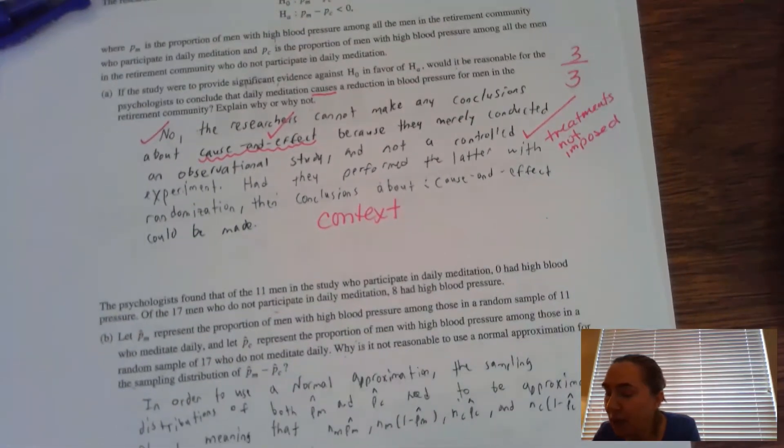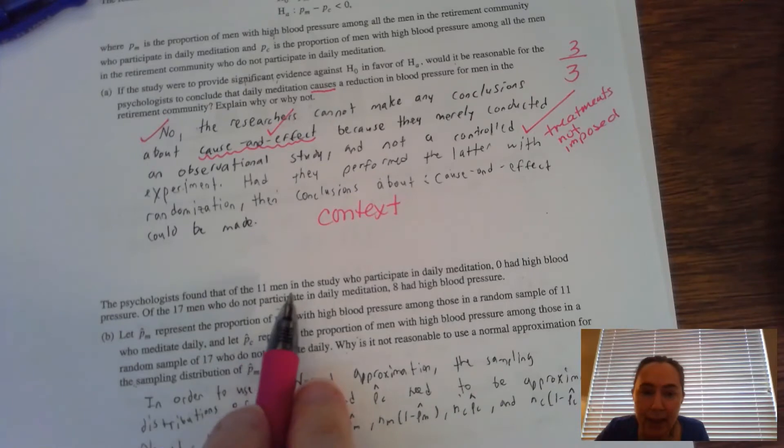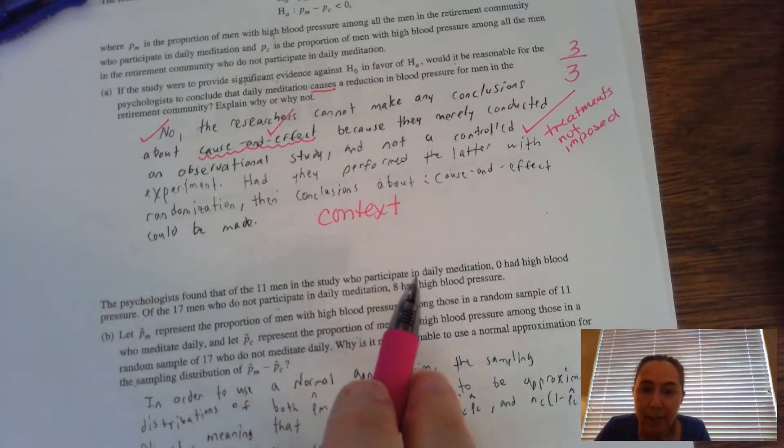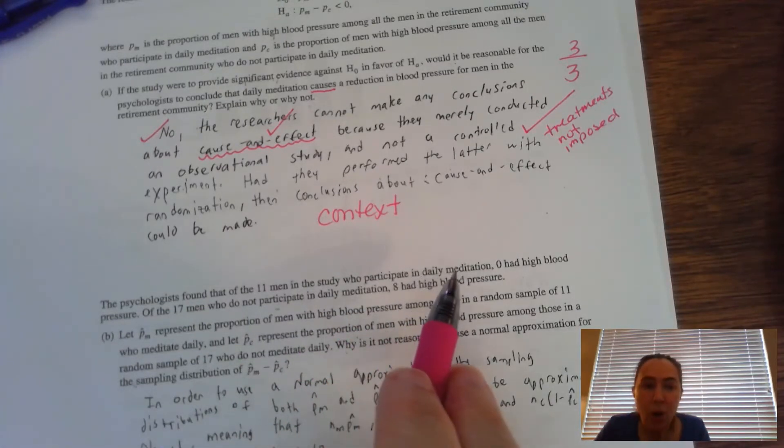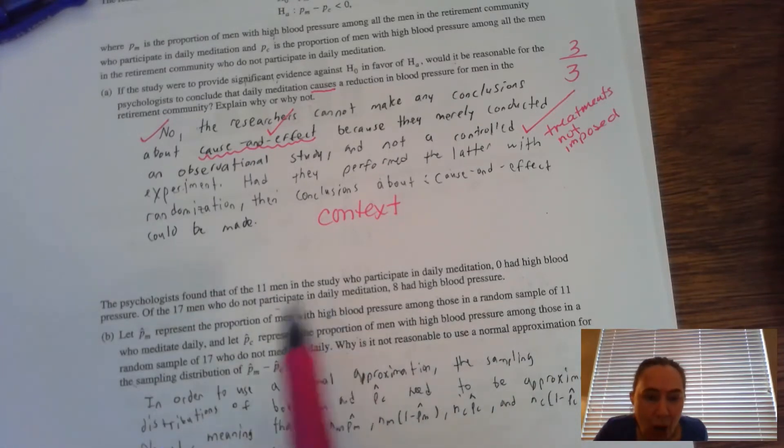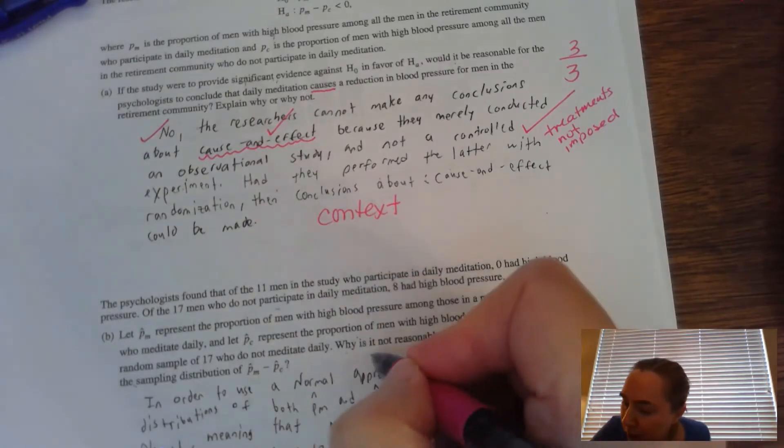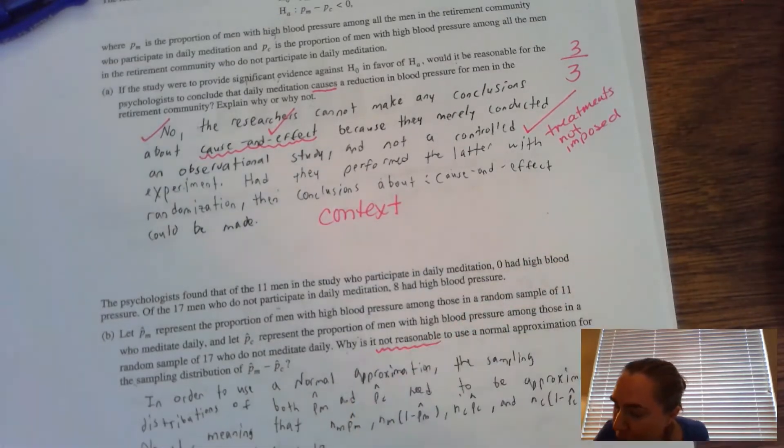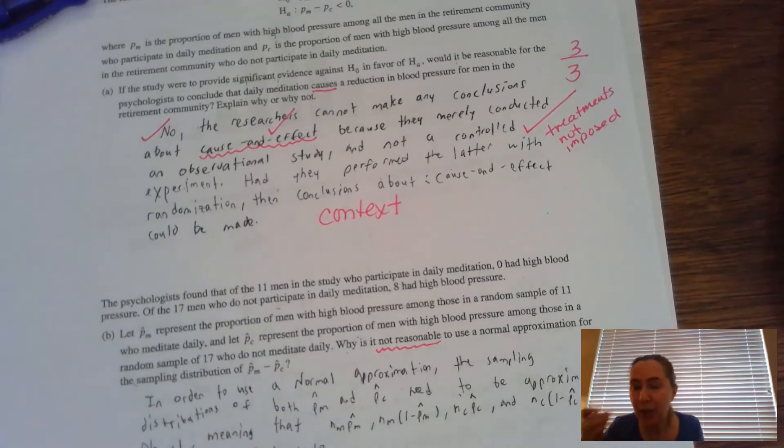Now B says, the psychologist found that of the 11 men who participate in daily meditation, zero of them had high blood pressure. And then they talk about something really fast and it says, why is it not reasonable to use a normal approximation?